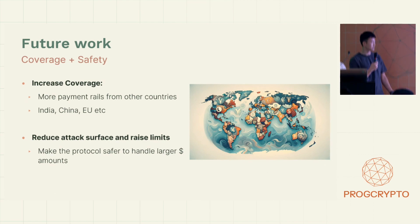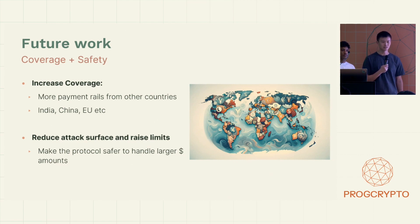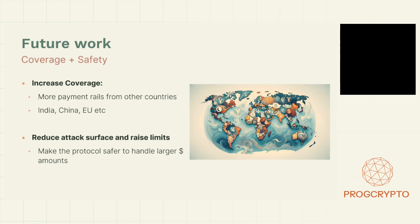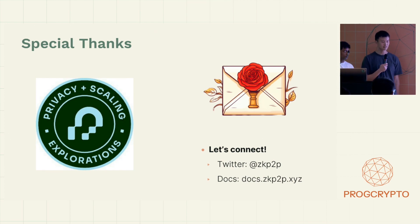We have some future work as well — mainly we want to focus on coverage and safety. Increase coverage by allowing more payment providers from other countries: India, China, EU, et cetera. And also reduce all of the attack vectors mentioned earlier and be able to raise limits for transactions, making the protocol safer to handle larger amounts. Special thanks to PSE for grant funding and also ZK email for all the collaboration on our circuits. Our Twitter's there and check out our docs. Thank you.